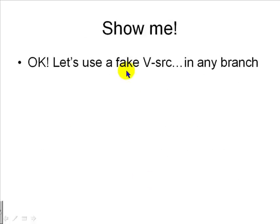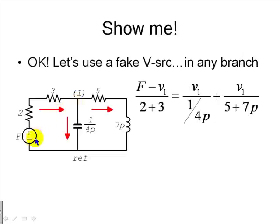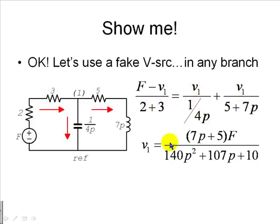Let's use a fake voltage source in any branch in the same circuit we had before. In this branch on the left, I have included a fake voltage source with a value F. And we write a KCL equation for node 1. The first current is going to be F minus V1 divided by 2 plus 3. The rest of the currents are the same. We solve for V1, and this is what we get. This is a differential equation with those three coefficients on the left-hand side. And on the right-hand side, we have seven times the derivative of F plus 5 times F.